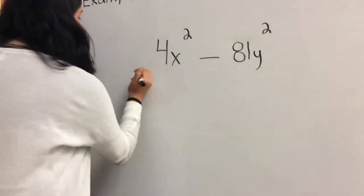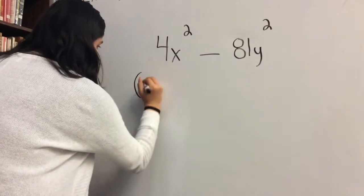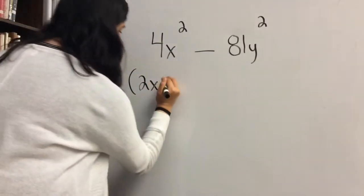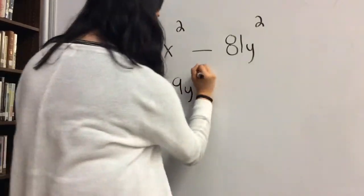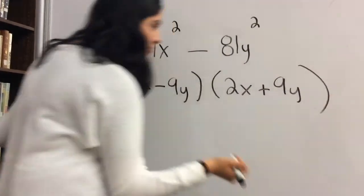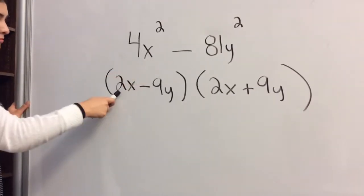In this problem specifically, we would be factoring out a 2x from the 4x², and we would factor out a 9y from the 81y². In the end, this should be your final answer.